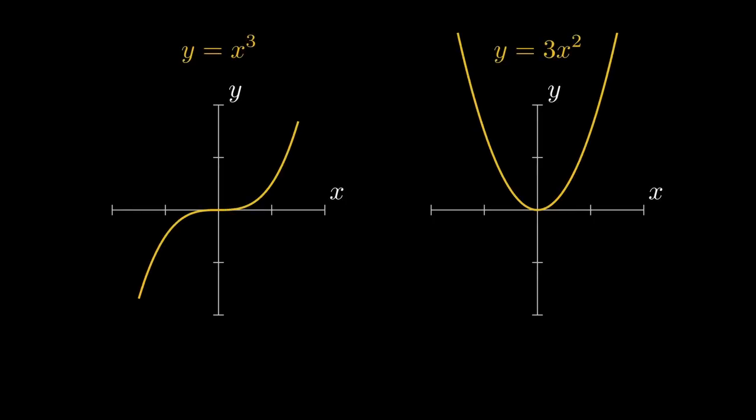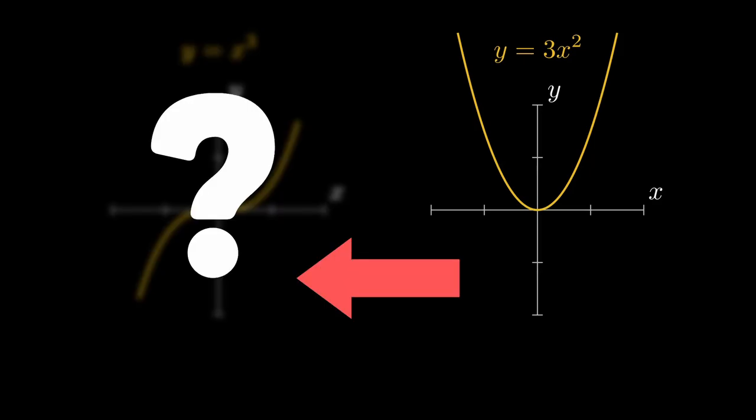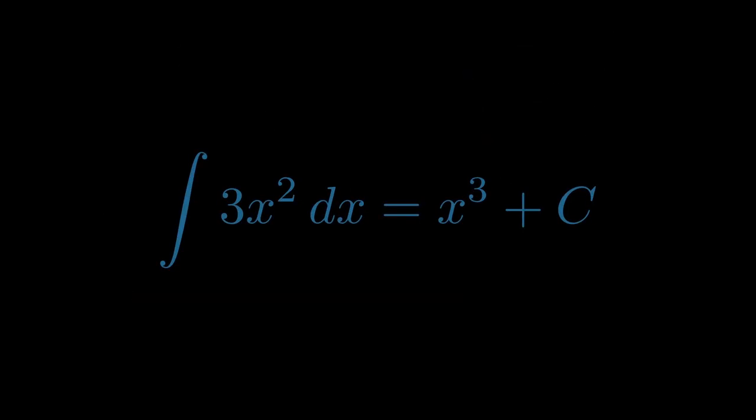Now we know why integration exists, let's talk about how it actually works. We already know that if we differentiate x to the power 3, we get 3x squared. But what if I gave you 3x squared and asked you to go backwards, to find the function it came from? This is the first puzzle of integration. In essence, you're trying to find the original function, the one that when differentiated would give you what you currently have.